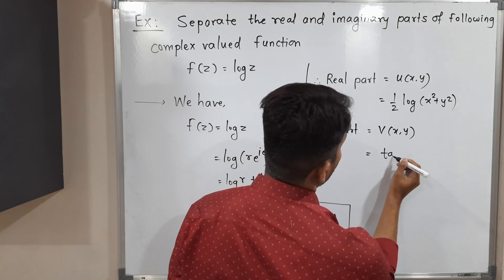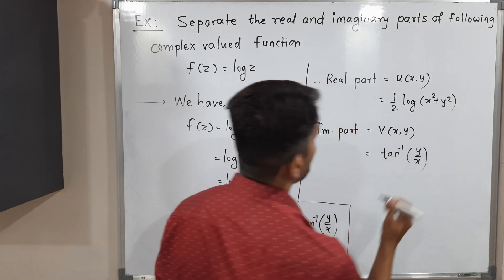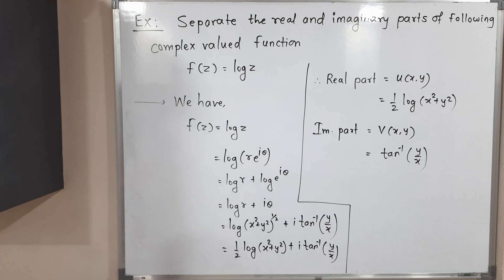And imaginary part v(x,y), that means the function which is multiple of i, is tan⁻¹(y/x). So in this way we found out the real and imaginary parts of the given complex valued function. Thank you, see you.